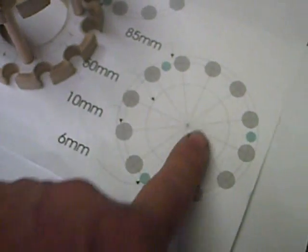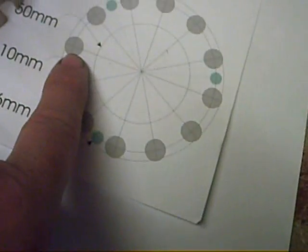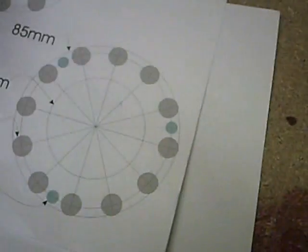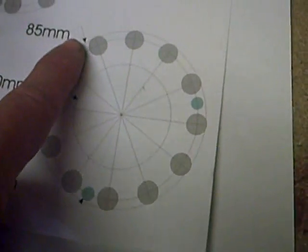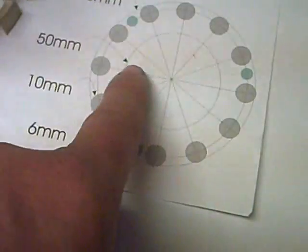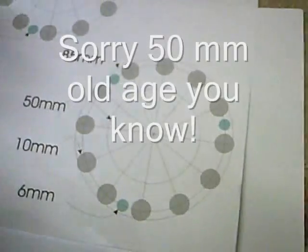All we did was cut this transfer out that we printed off the computer, we glued it onto a piece of MDF and then just drilled all the holes at the various points where it's marked. Now as you can see the outside diameter is 85mm. The internal hole of this is 55mm.